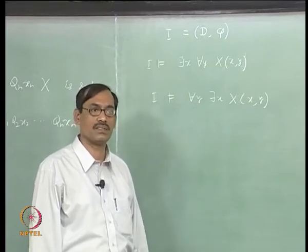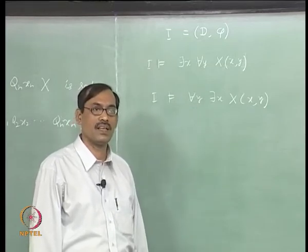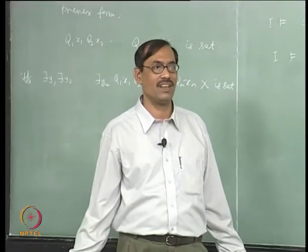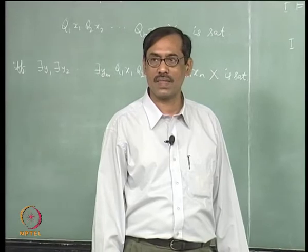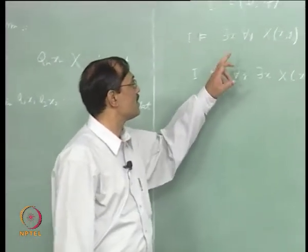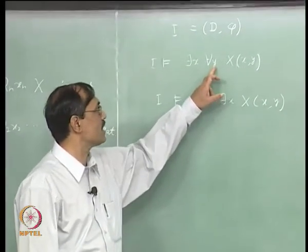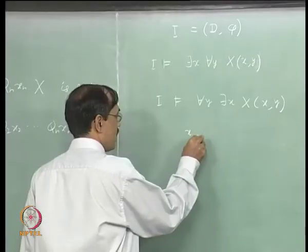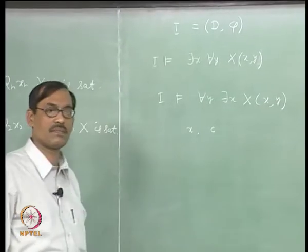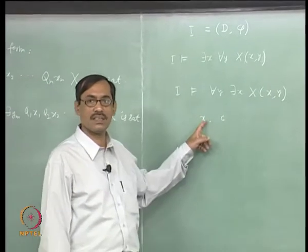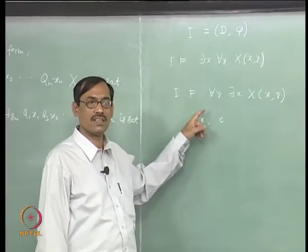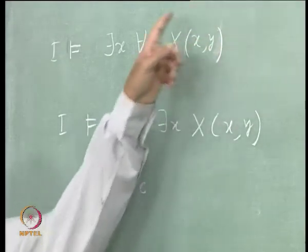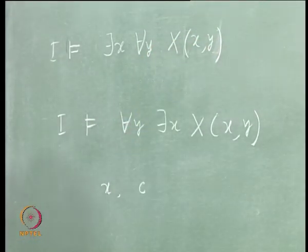These two cases — dependence and non-dependence — have to be clearly demarcated. When x does not depend on y, for example ∃x∀y, we might say that instead of x, we replace a new constant c. When we say 'new', it means it should not occur in this formula. That is all we need.